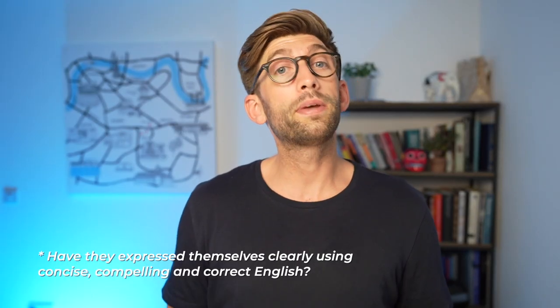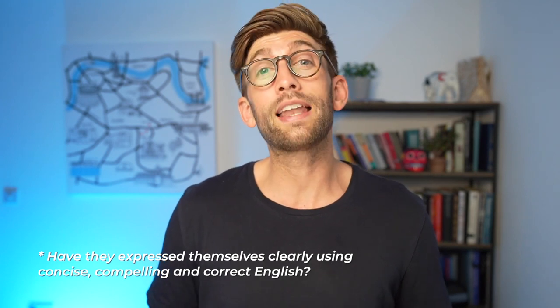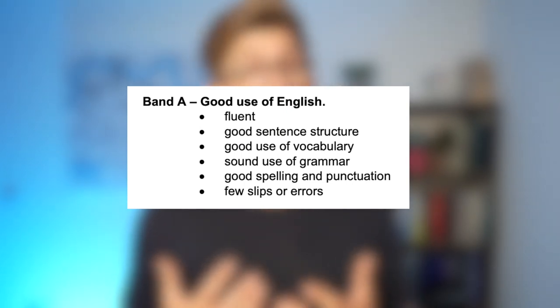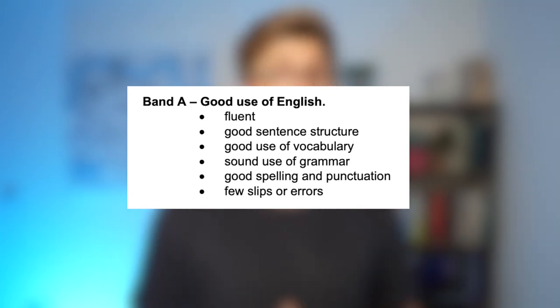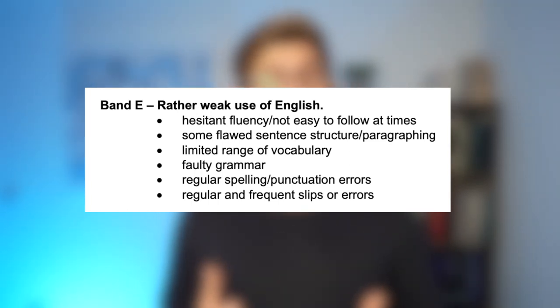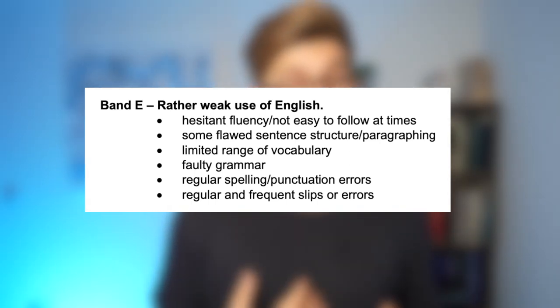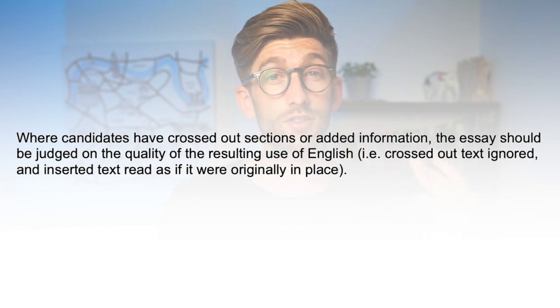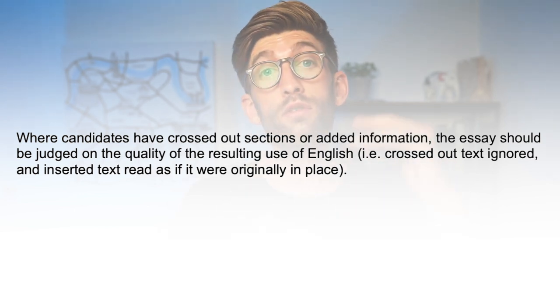For quality of English, markers assess whether candidates have expressed themselves clearly using concise, compelling and correct English. Band A requires fluent writing, good sentence structure, good use of vocabulary, sound grammar, good spelling and punctuation, and very few errors. Band E represents rather weak English — hesitant fluency, not easy to follow, some flawed sentence structure and paragraphing, limited vocabulary, faulty grammar, and regular spelling or punctuation errors. The mark scheme provides parameters for A, C and E, with B and D awarded for candidates falling between those bands. Crossed-out text or additions are ignored; markers judge the quality of the final product.